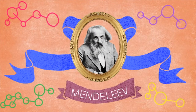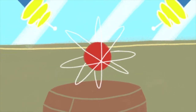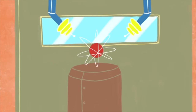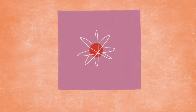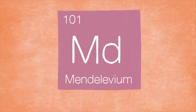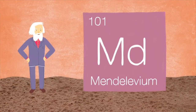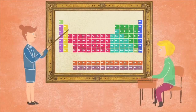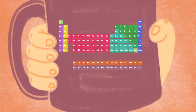Dmitri died without a Nobel Prize in 1907, but he wound up receiving a much more exclusive honor. In 1955, scientists at UC Berkeley successfully created 17 atoms of a previously undiscovered element. This element filled an empty spot in the periodic table at number 101 and was officially named Mendeleevium in 1963. There have been well over 800 Nobel Prize winners, but only 15 scientists have an element named after them. So the next time you stare at a periodic table, whether on the wall of a university classroom or on a five-dollar coffee mug, Dmitri Mendeleev — the architect of the periodic table — will be staring back.